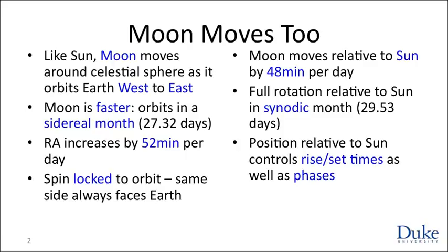Moving at a rate of 48 minutes per day, the moon completes a full 24-hour rotation about the celestial sphere relative to the sun once every 29.5 days — that is what is called a synodic month. What repeats once every synodic month, therefore, is the relative position of sun and moon on the celestial sphere.